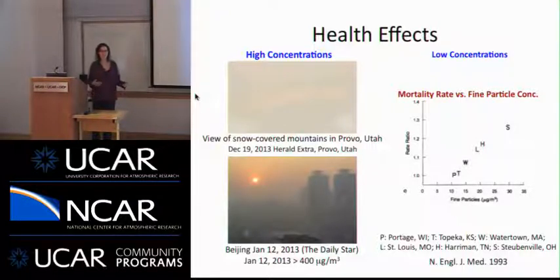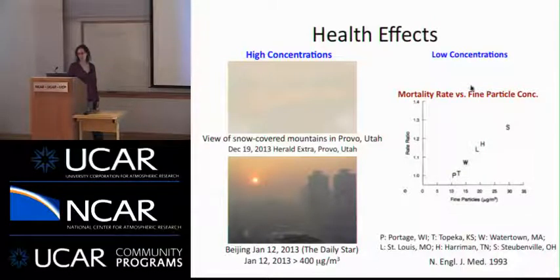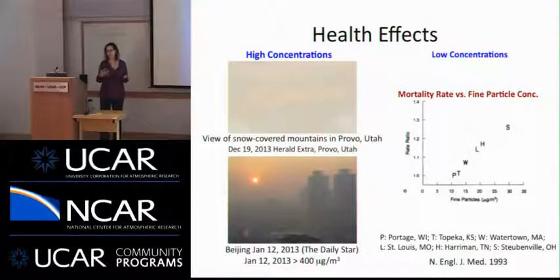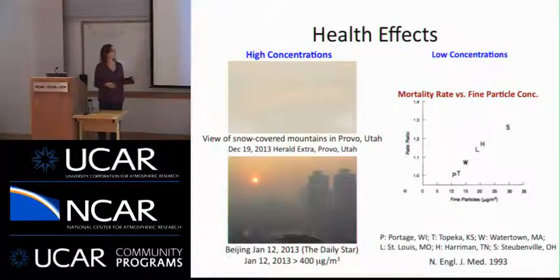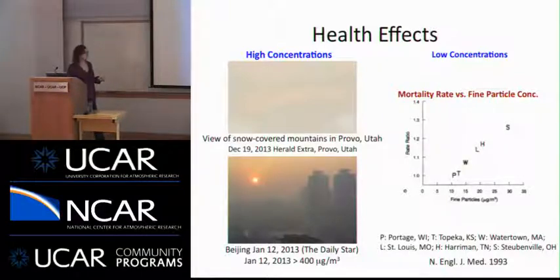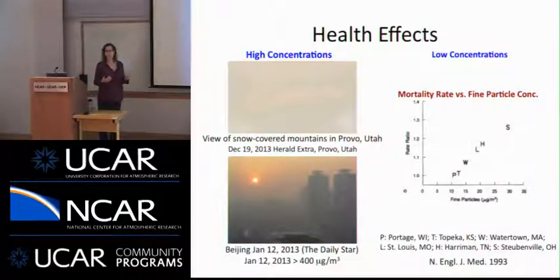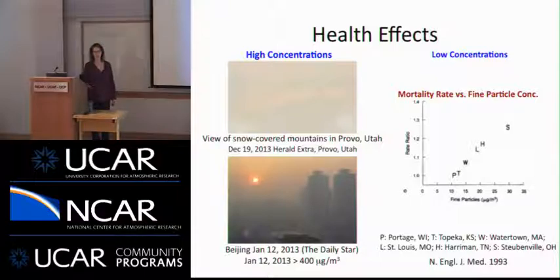But we see the effects of particles even at low concentrations. There was a famous study published in 1993 called the Harvard Six City Study, which looked at different atmospheric pollutants and their relationship to mortality rates. When they graphed things like ozone — a known respiratory irritant — versus mortality rate, it showed no correlation. But their plot of mortality rate versus fine particle concentration showed a direct correlation even at low concentrations, down around the 25 micrograms per meter cubed level where the EPA and WHO want us to be.